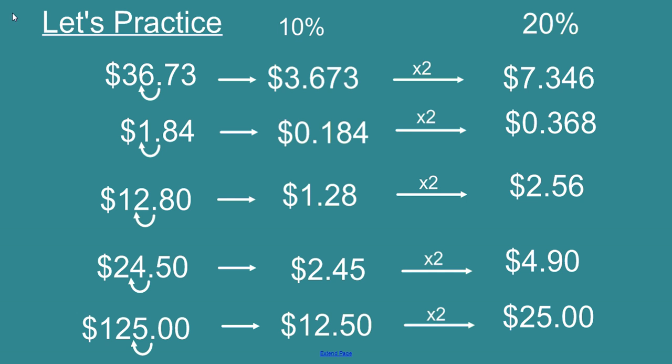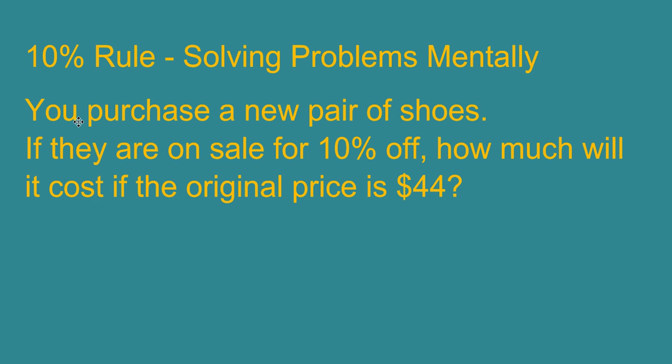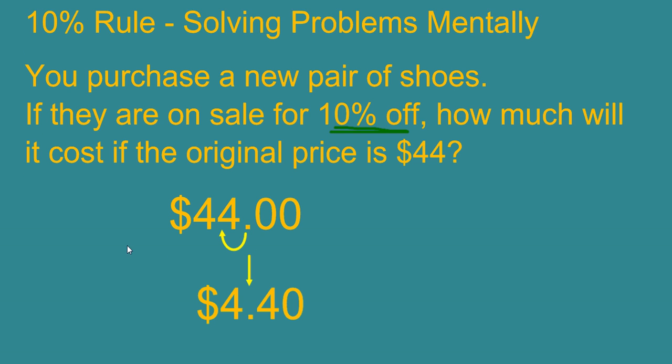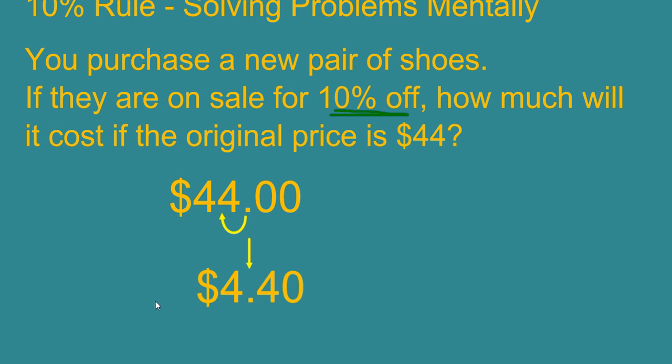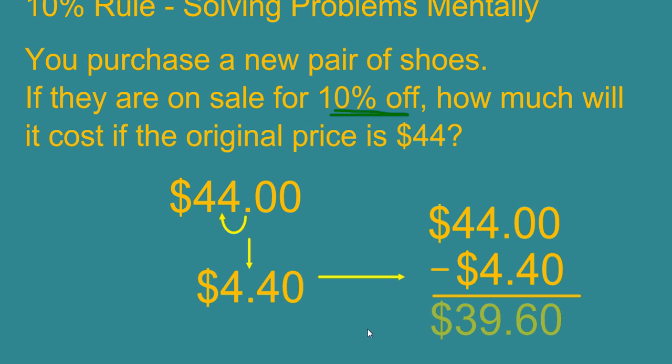Let's try to apply this to solve some real world problems. You purchase a new pair of shoes and they are on sale for 10% off. How much will it cost if the original price is $44? Well the first thing that we need to do is write our $44 and find out what 10% is. $4.40. Then we simply subtract that value since it's a discount from the original price and we get $39.60.